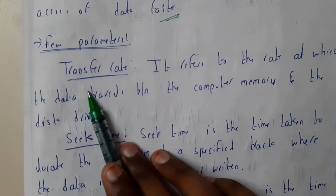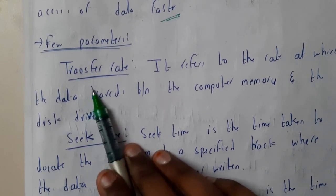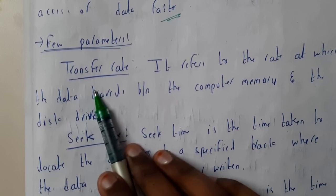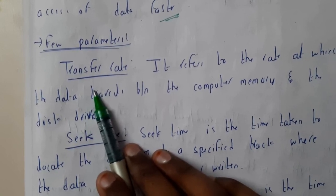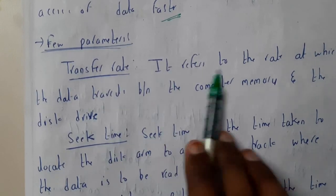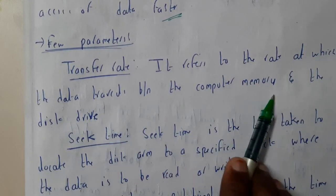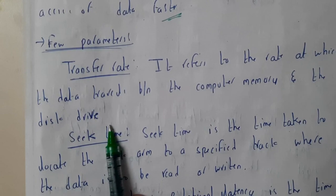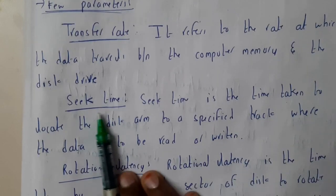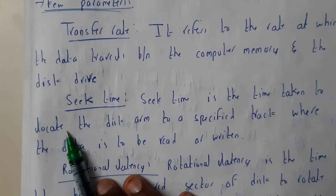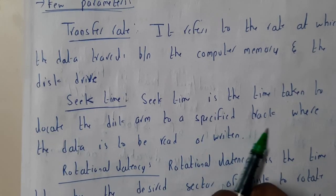Transfer rate refers to the rate at which data travels between the computer memory and the disk device. A simple example: when you give a pen drive to a friend to copy a file, the copying speed shown is the transfer rate.